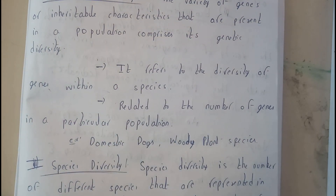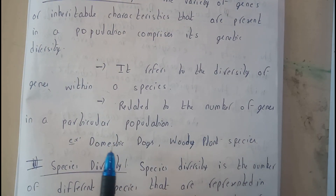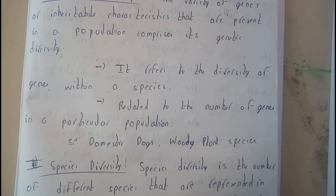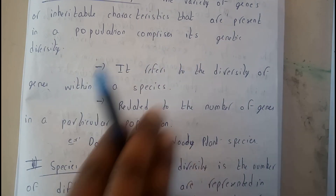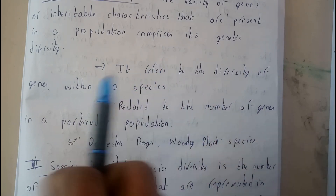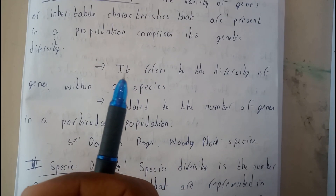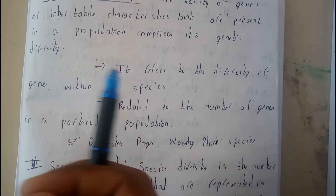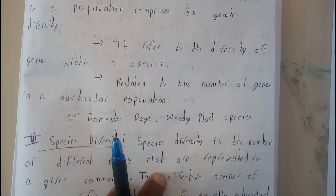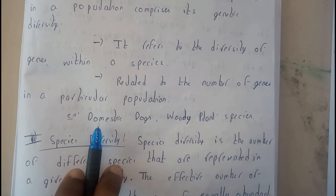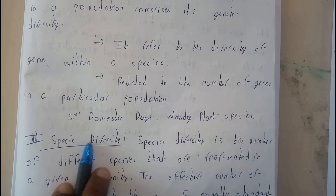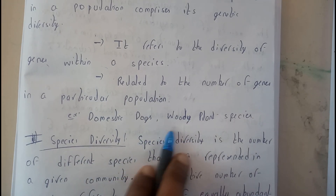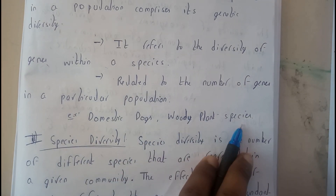Let us take an example of rice — there are many types of rice, and each variety has different genetic characteristics. The small changes show the variation. For example, domestic dogs have many breeds, and similarly woody plant species show this variation.